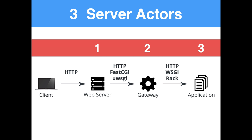In the picture here we have four parts. The first part is a client, and the client is not part of your web server — it's just whatever is sending a web request to your server. That could be your web browser or someone's API call from their own code. Whatever it is, it's usually some sort of HTTP call.